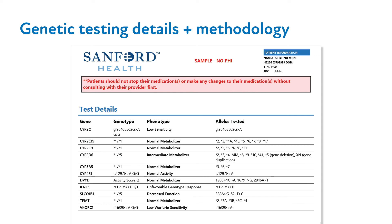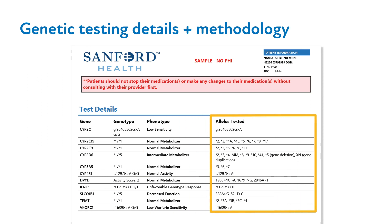As mentioned earlier, the phenotype is the laboratory interpretation of the PGX result and provides a description of the impact of the genotype on protein function or enzyme activity. The alleles tested column lists those alleles that were assayed.